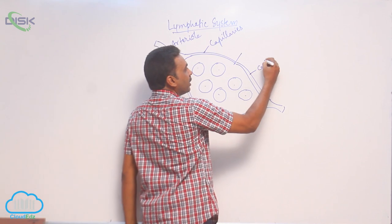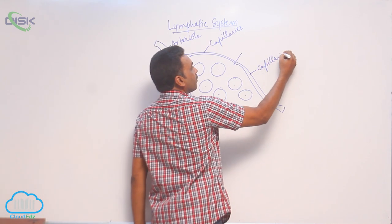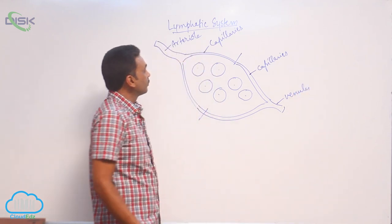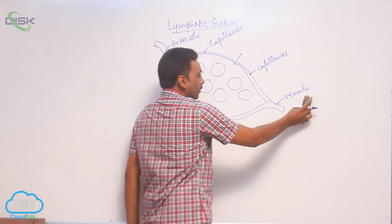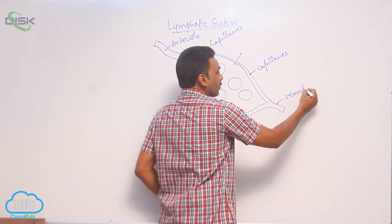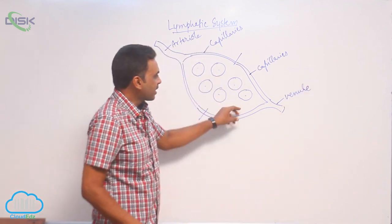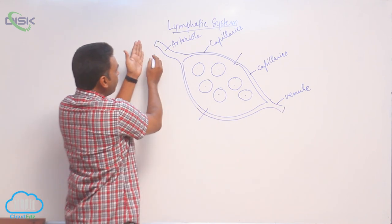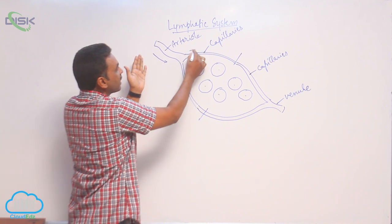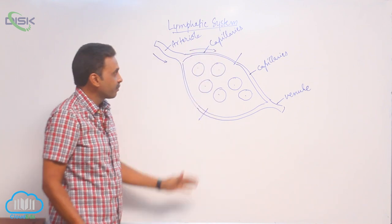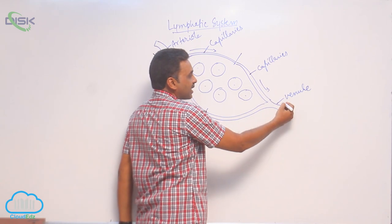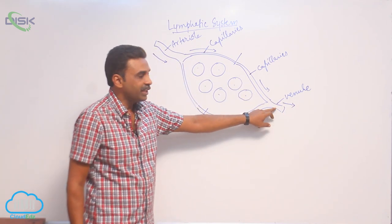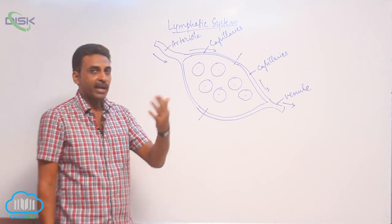The capillaries combine together to form venules. Blood passes through arterioles, enters into capillaries, and that blood is collected by capillaries and enters into venules. From there it goes: capillaries, venules, veins, vena cava, and back to the heart.